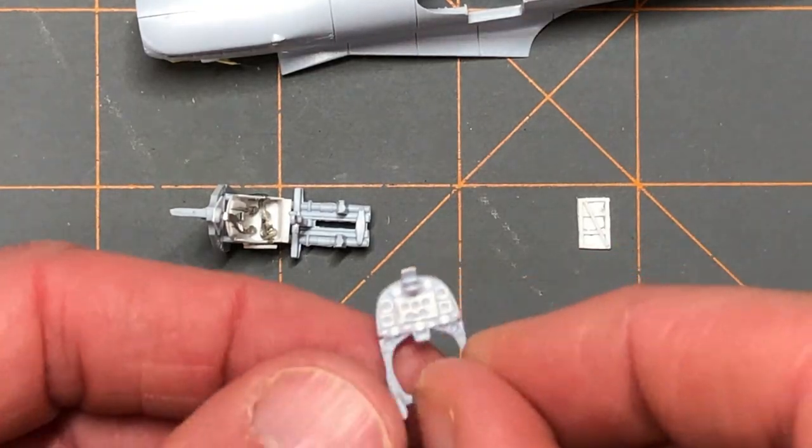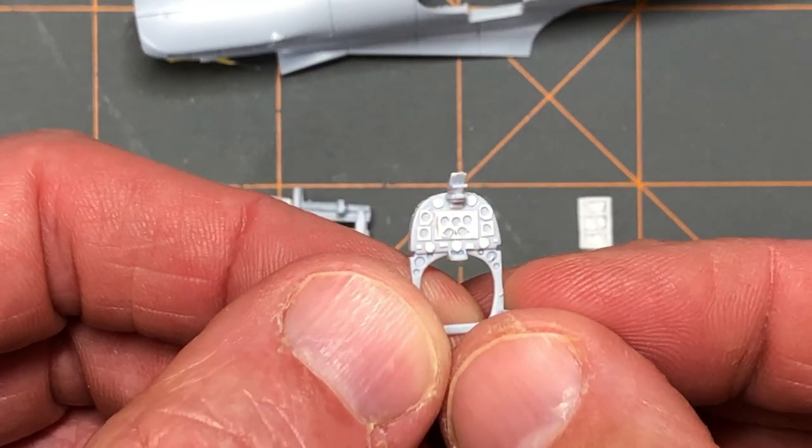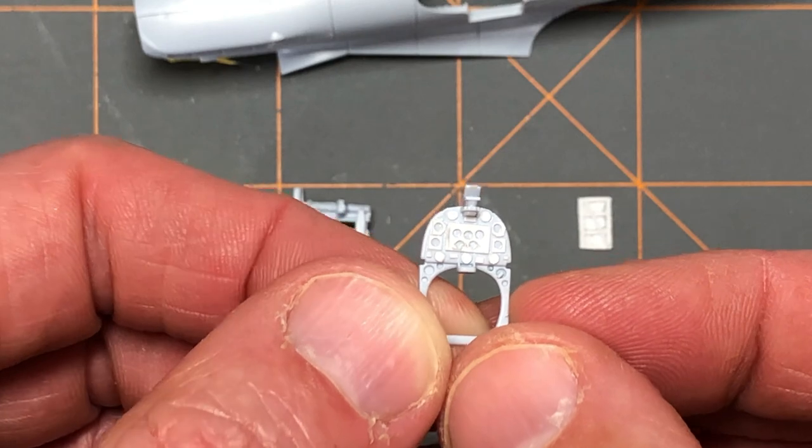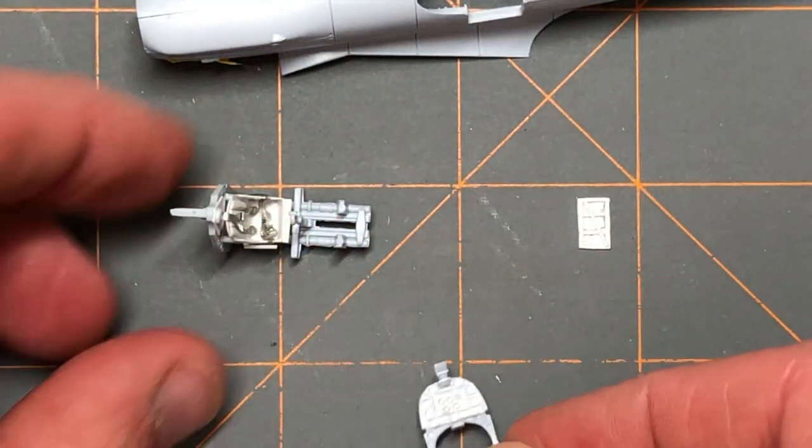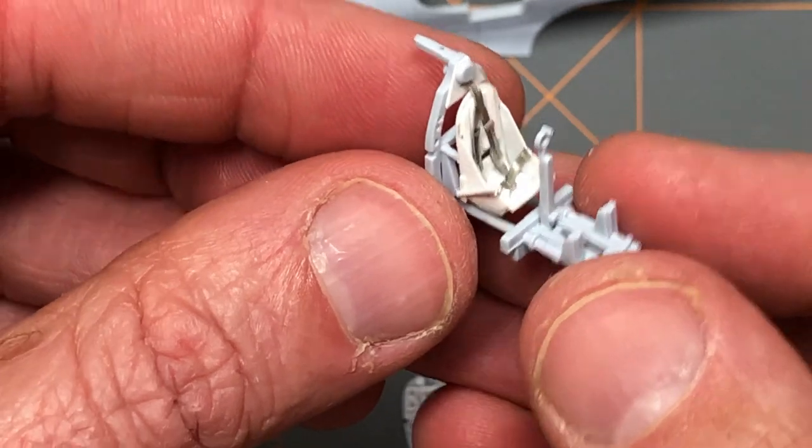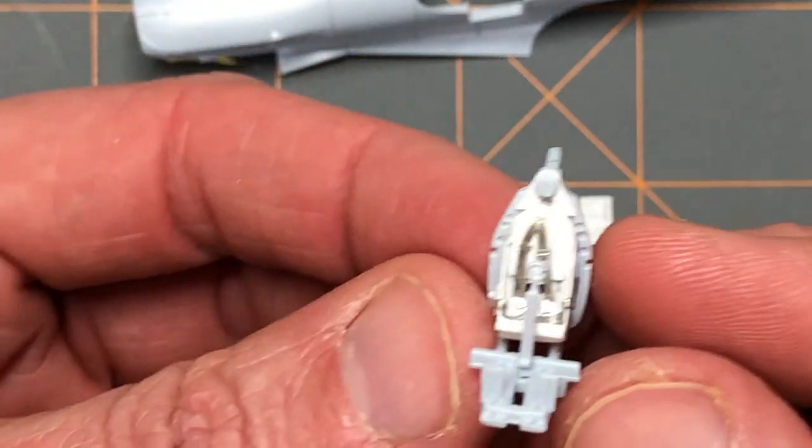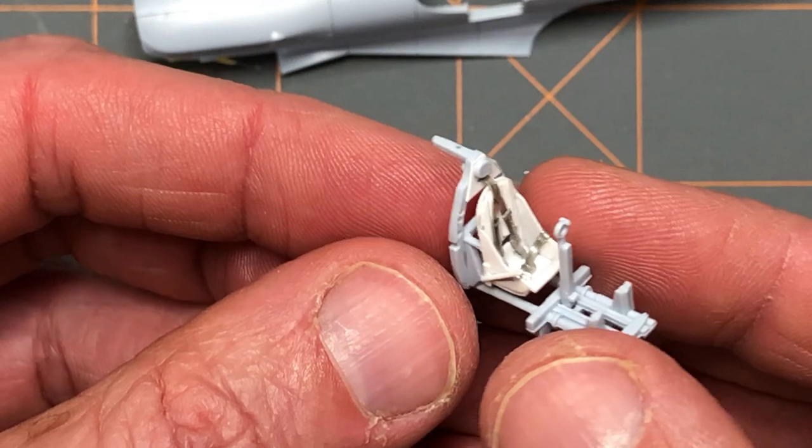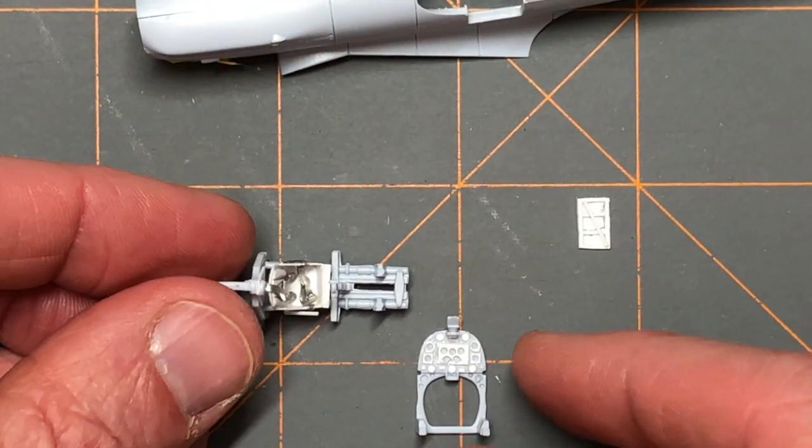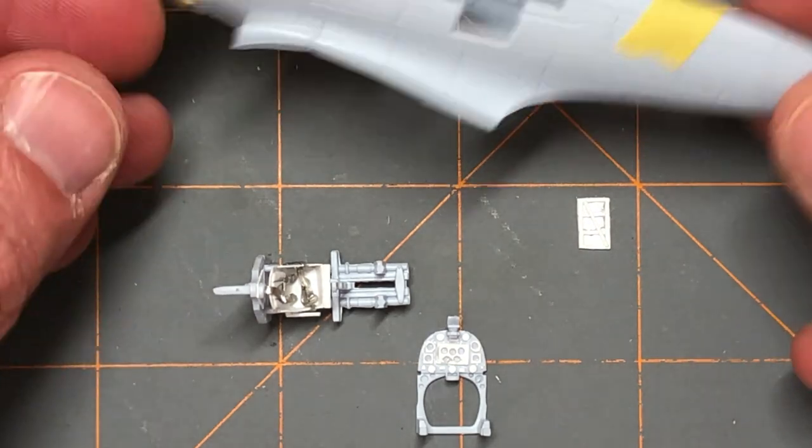That's about all the modifications we need to do to this thing. You can see here the instrument panel looks a lot better by just adding a few simple plastic bits to it. And you can see the cockpit seat here, a lot better as well. It'll certainly look a lot better once we get some paint on it, which we can start doing here in just a little bit now that we got the major modifications done.